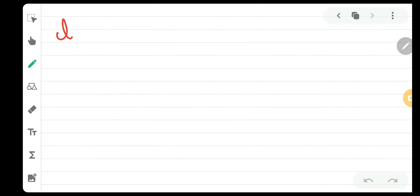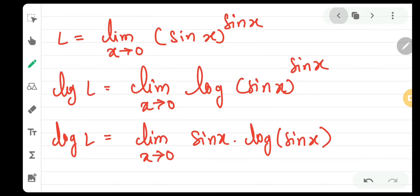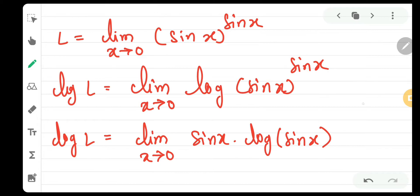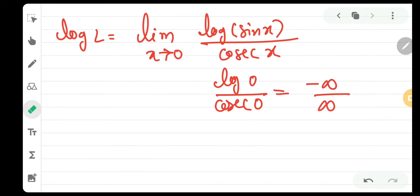Now, log of sin x cannot be taken into the denominator, but sin x can be taken into the denominator. So, log l is equal to limit x tends to 0 log of sin x. And when sin x goes into the denominator, definitely it will become cosec x. Now, if you put out the value of x as 0, it will be log of 0 upon cosec of 0. Log of 0 as everyone of us know is nothing but minus infinity and cosec of 0 is also infinity. So, we have infinity by infinity form which can be easily solved by L'Hôpital's rule.